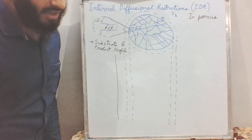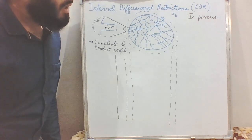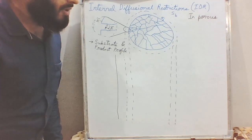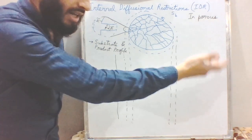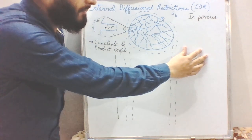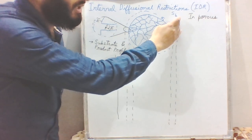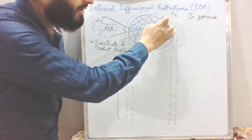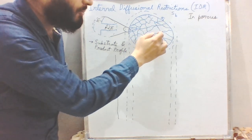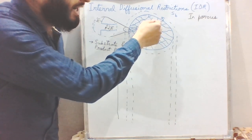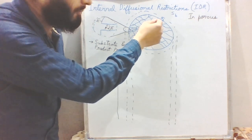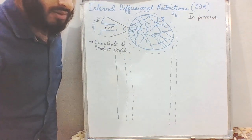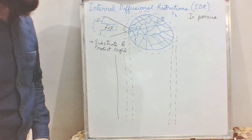Here we can see that the enzymatic reactions will depend upon the availability of the substrate, as we have seen in external diffusion restrictions also. We have a bulk substrate concentration, and this bulk substrate diffuses into the stagnant layer. From this stagnant layer, in the case of porous supports, the substrate will move into the pores and reach the active site of the enzyme immobilized within the pores after diffusing inside the particle.